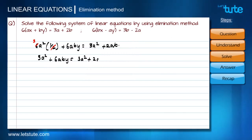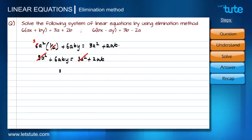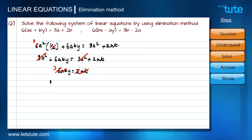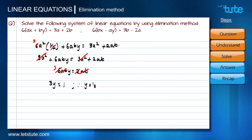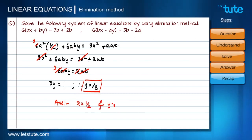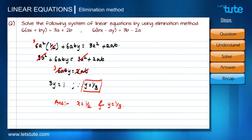Three·a² cancels from both sides, leaving six·ab·y equals two·ab. The ab terms cancel from both sides, giving six·y equals two, so y equals one-third. We have now found both values: x equals one-half and y equals one-third. Let's have a quick glance at the steps we followed to solve this system.